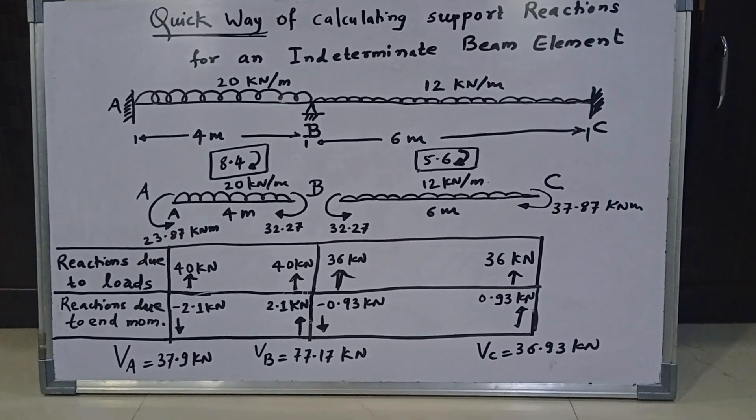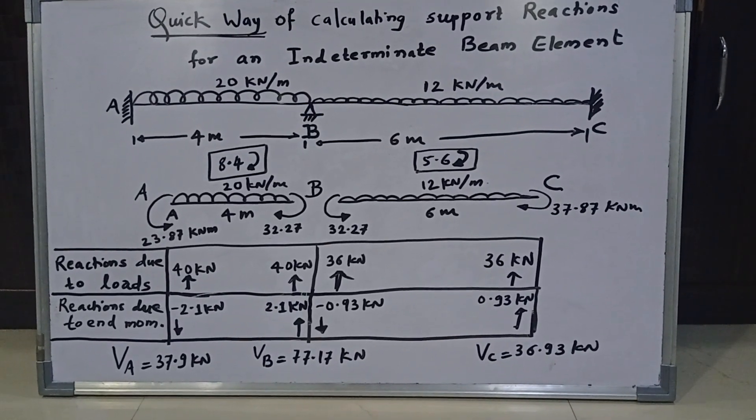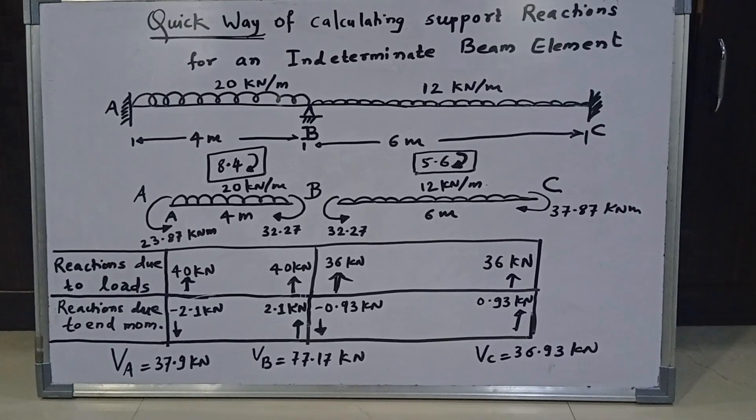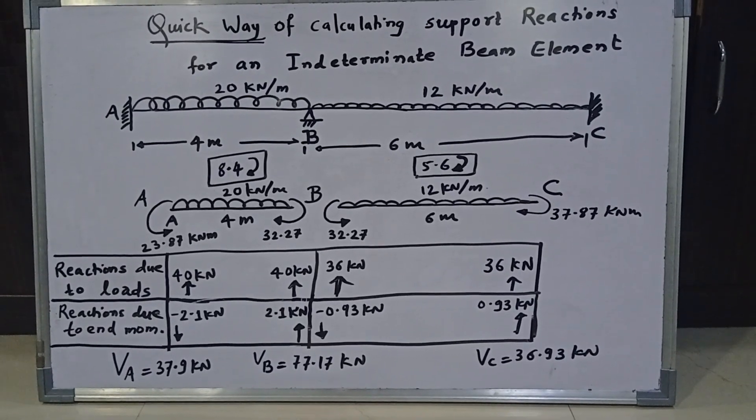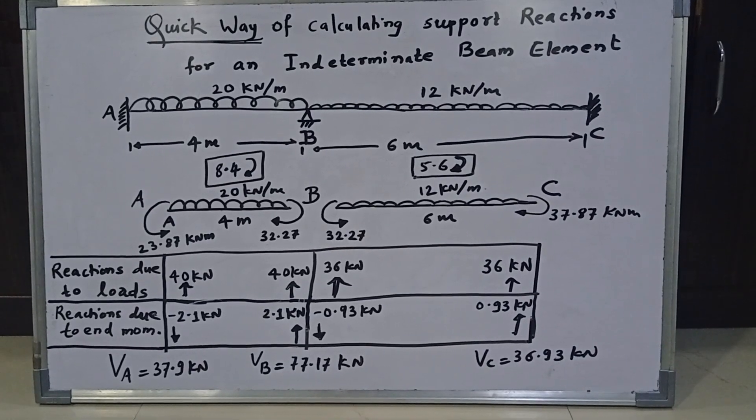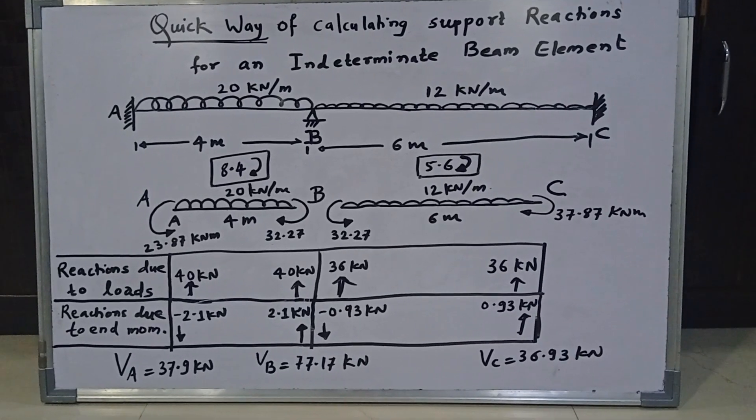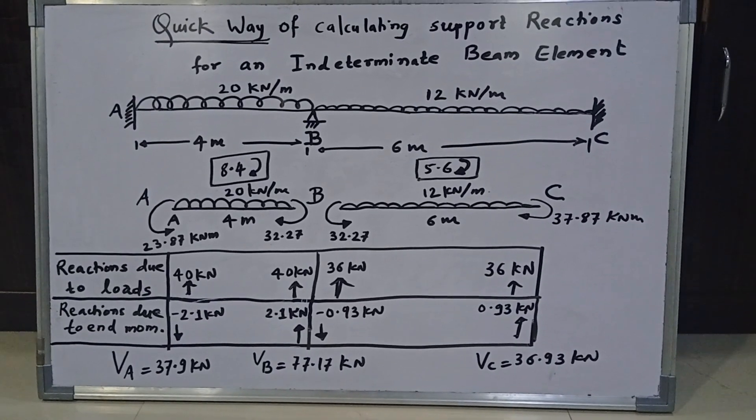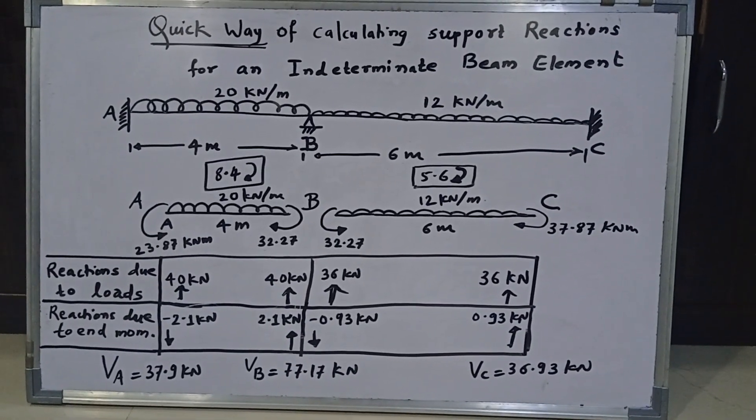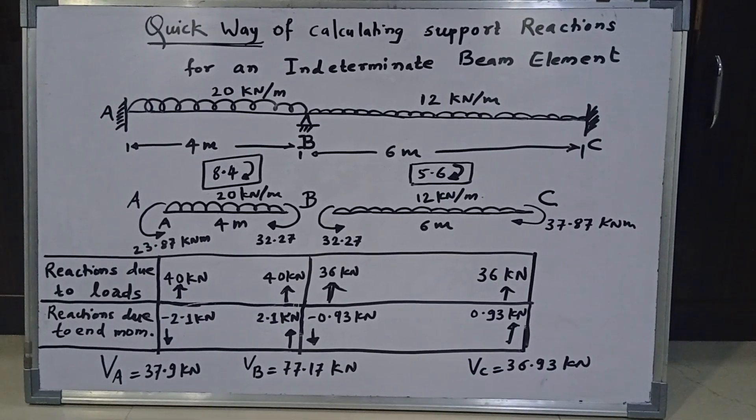Now let us forget about external loads. Now only let us look at the reactions due to end moments only. So look at the second row of the table or you can say bottom row of the table. Now, the end moments for A-B are at B 32.27 kN meter clockwise and at A 23.87 kN anticlockwise. And therefore, the net moment which part A-B is subjected to is 32.27 clockwise minus 23.87 anticlockwise. And therefore, I have written 8.4 kN clockwise. That is the net moment which part A-B is subjected to. Now it is very clear that part A-B is trying to rotate in clockwise direction because of a net moment of 8.4 kN in clockwise direction.